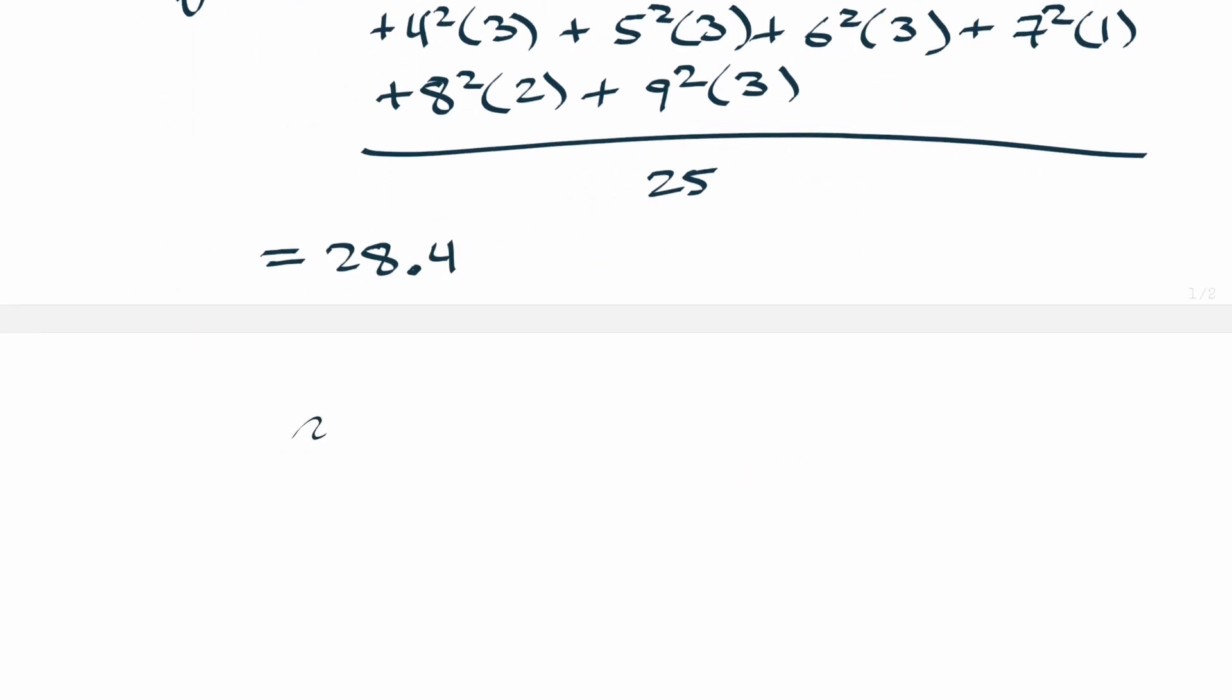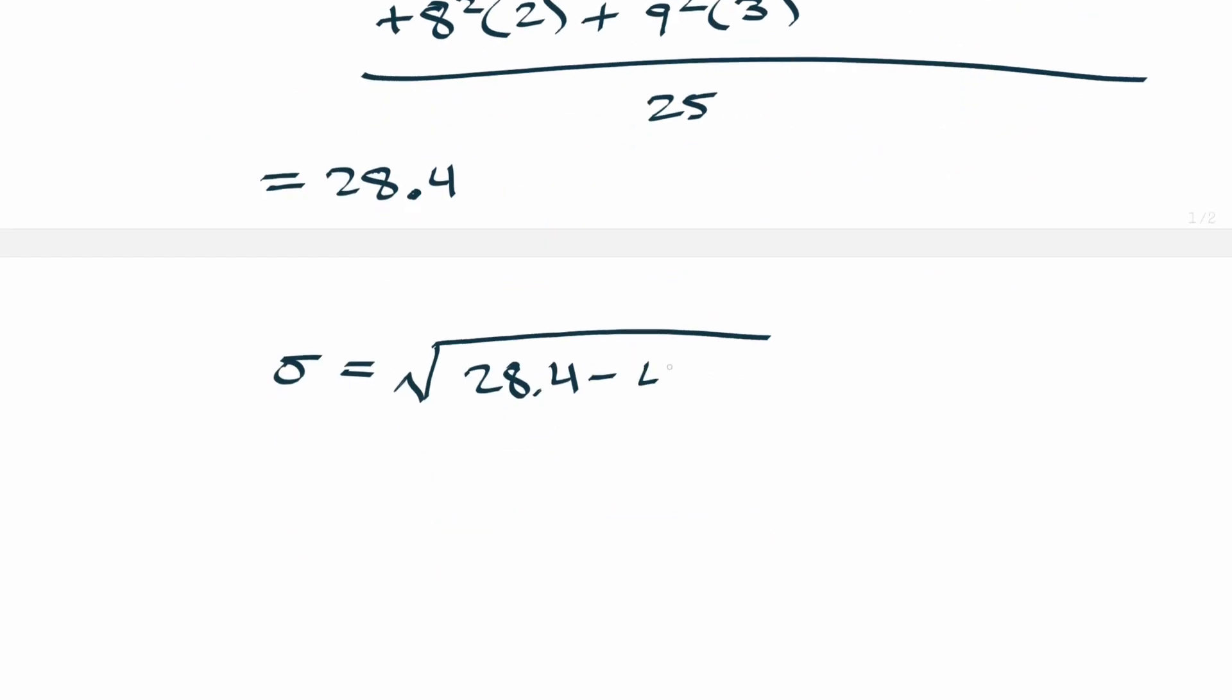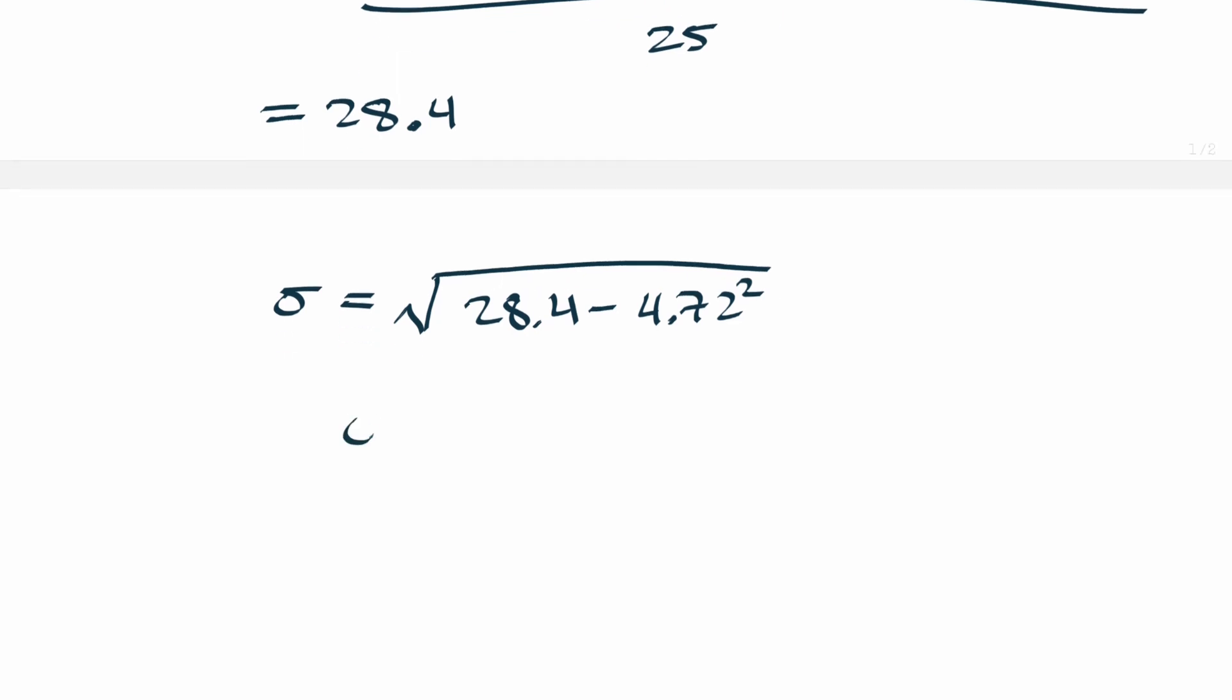And so what does that mean when you're calculating standard deviation? Well you just plug that into the formula: square root of 28.4. A common mistake is to then go ahead and square this, but remember we already squared it, that's what this whole part was, so don't square it again. We just have 28.4 minus 4.72 squared, and that final answer comes out to 2.47. So sigma equals 2.47 and that's your final answer.